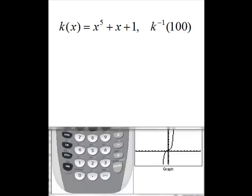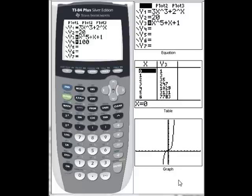But again, we weren't asked to. We were asked to find k inverse of 100. So we want to find where our function has an output of 100. So once again, we'll put each of these in our graphing calculator.